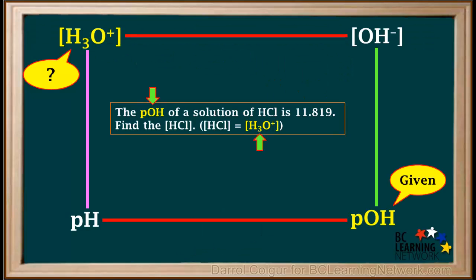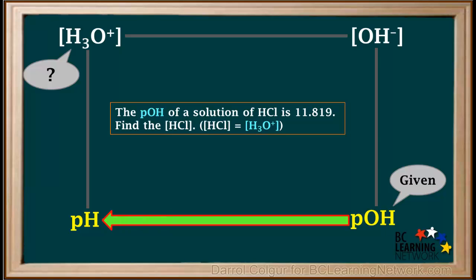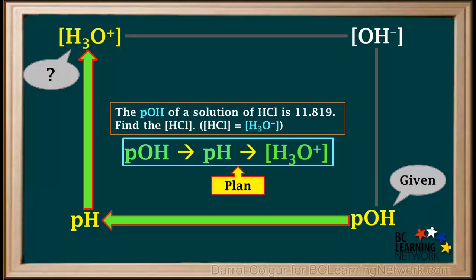In this problem, we're given the pOH and need to find the hydronium ion concentration. The easiest plan is to start by converting pOH to pH, and then converting pH to hydronium ion concentration.